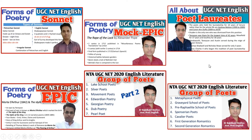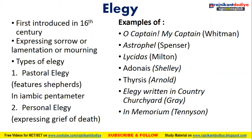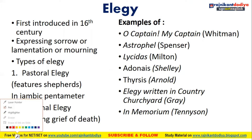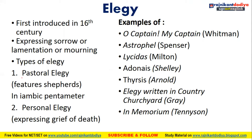You can watch related videos on forms of poetry, groups of poets, and poet laureates from my channel. Elegy was first introduced in the 16th century and is an expression of sorrow, lamentation, or mourning by the poet. There are two types: pastoral and personal. Pastoral elegy is associated with shepherds or farms, features shepherds in its narration, and is written in iambic pentameter.